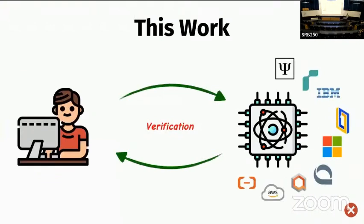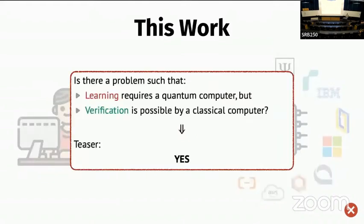Now we are at TQC, so we do quantum. The same question will eventually arise in some unknown number of years when we have well-working quantum computers and those fancy quantum learning algorithms that people came up with are running on quantum servers. Again, most likely many users won't have all this computing power, expertise, or data, so we need some means of verifying these things. In this work we ask the same question in the quantum setting: is there a learning problem such that learning requires a quantum computer and quantum data, but verification is possible by a classical computer? And a quick teaser — the answer is yes.